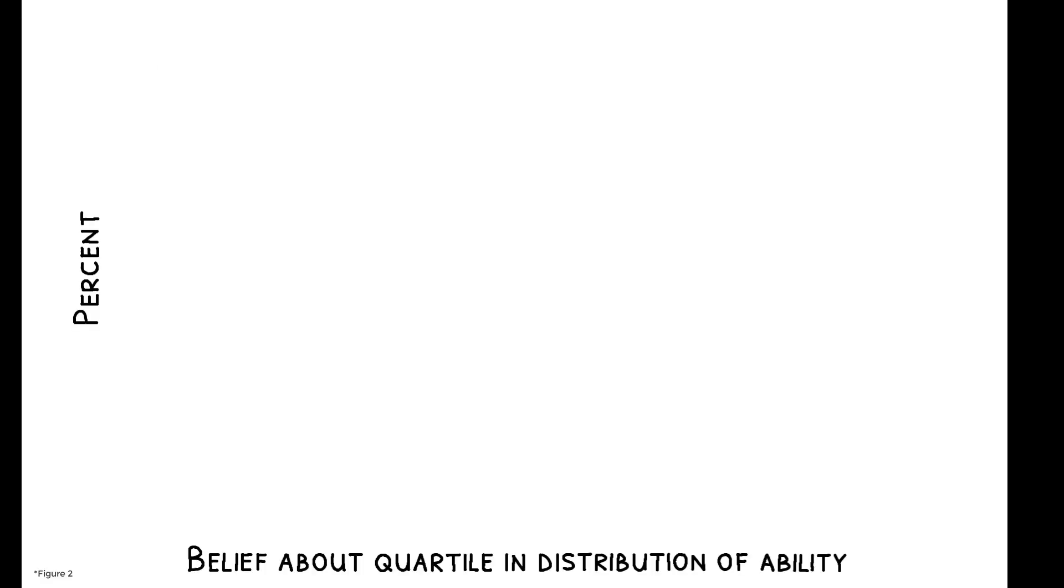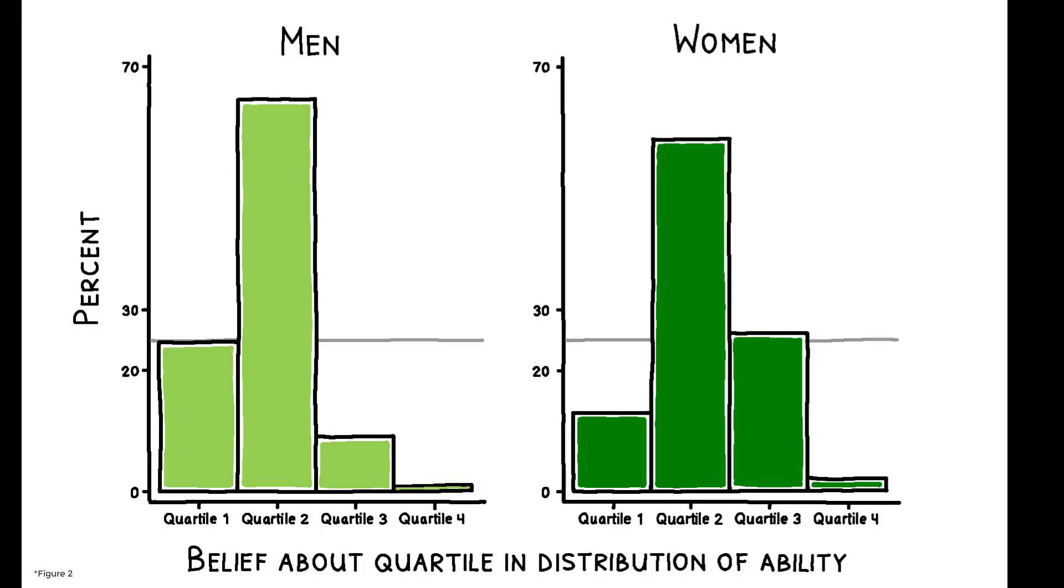When asked to assess their ability relative to others, 61.9% of receivers believed they were in the second quartile of performance, less than 1.6% believed they were in the bottom quartile, and men were more overconfident than women.